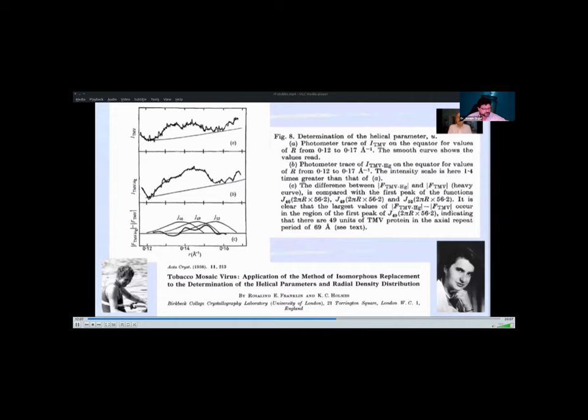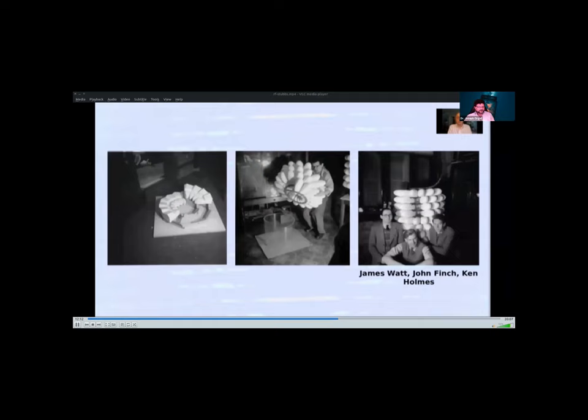Rosalind was invited to build models of TMV and also incidentally the spherical virus, poliovirus, which she'd recently become interested in, to display at the Brussels World's Fair in 1958, showing everything her group had learned about the virus up to that time. They had the symmetry of TMV, the dimensions of the protein subunits and the location of the RNA.